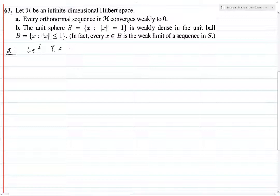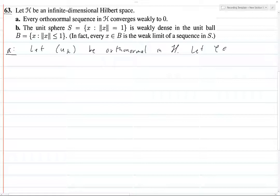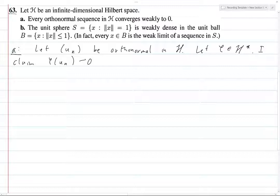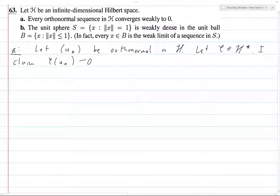Let phi be in H star. Let u_k be orthonormal in H. I claim phi of u_n goes to zero. That's what it means to converge weakly to zero. It means that for every functional, the functional converges to the zero functional.